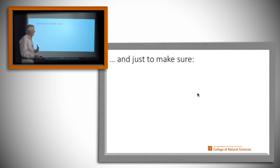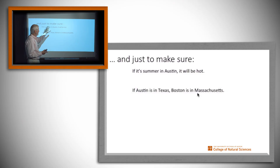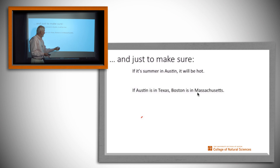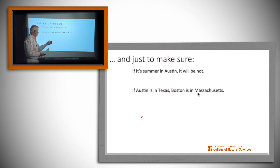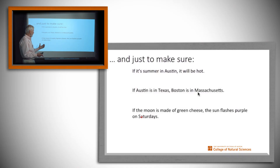Let's look at one more set of examples. If it's summer in Austin, it will be hot — antecedent true, consequent true, so it's a true implication. If Austin is in Texas, then Boston is in Massachusetts — again both are true, and notice there is no causality here. No one believes Boston is in Massachusetts because Austin is in Texas, but we don't care for the logical notion of implication: if both parts are true, the implication is true.